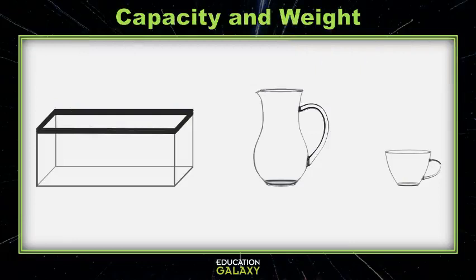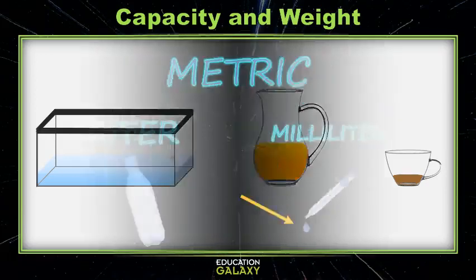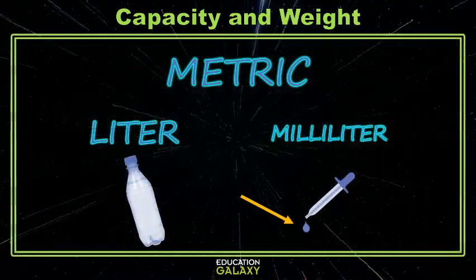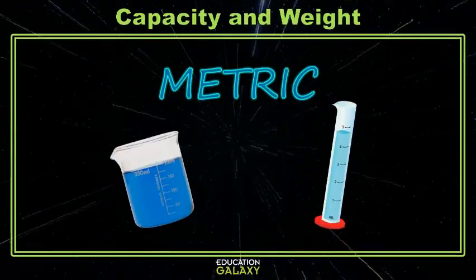Sometimes you'll see containers with some amount of fluid in them, and you'll be asked to find out how much is in them. To measure those amounts in the metric system, we have units of liters and milliliters. A liter is about a bottle of drinking water, and a milliliter is about a drop. What type of tools can we use to measure these? We have things like beakers and graduated cylinders.